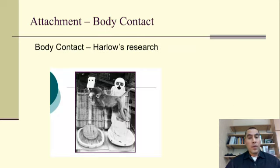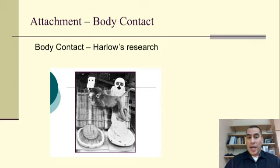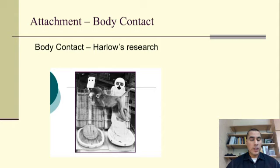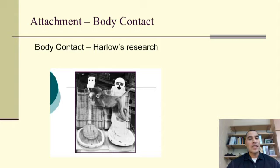Another key factor in promoting attachment is body contact and touch. We looked at this in Harlow's famous experiment with baby monkeys separated from their mothers at birth and presented with two surrogate mothers — one made of hard, cold wire that had food, and the other soft, warm, and furry but with no food. When these babies were startled, they preferred to cling to the soft, warm mother even though she did not have food. This emphasized the importance of touch in establishing attachment.